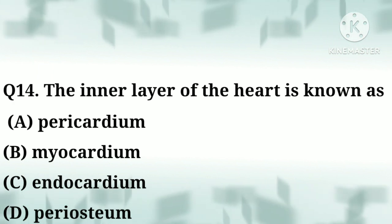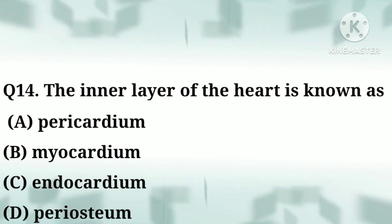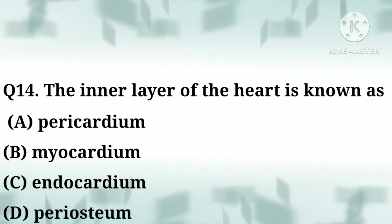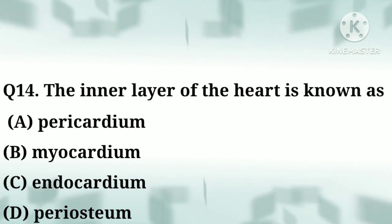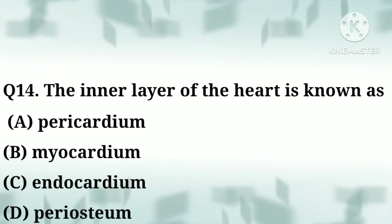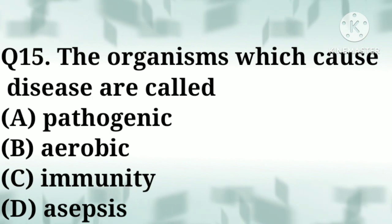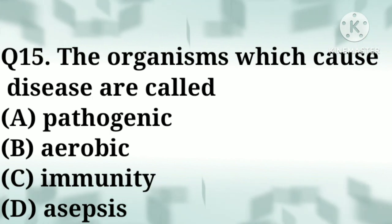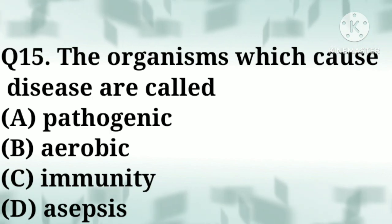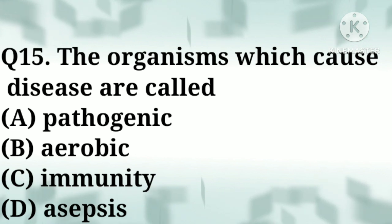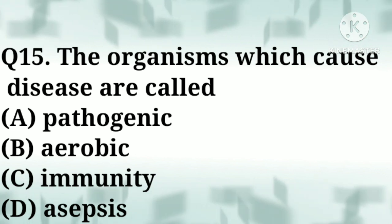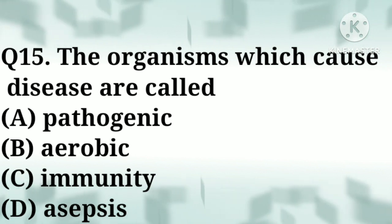Question number fourteen: the inner layer of the heart is known as — option A: pericardium, option B: myocardium, option C: endocardium, option D: periosteum. Correct answer: option C, endocardium. Question number fifteen: organisms which cause disease are called — option A: pathogenic, option B: aerobic, option C: immunity, option D: asepsis.